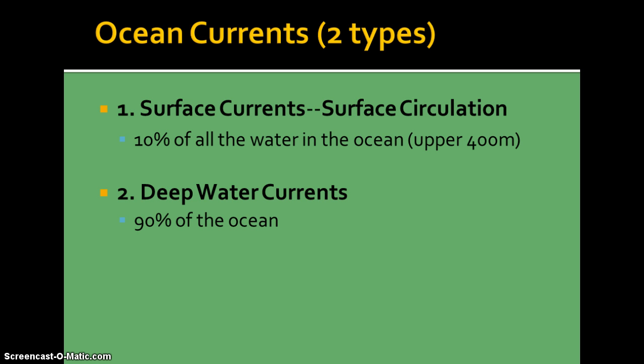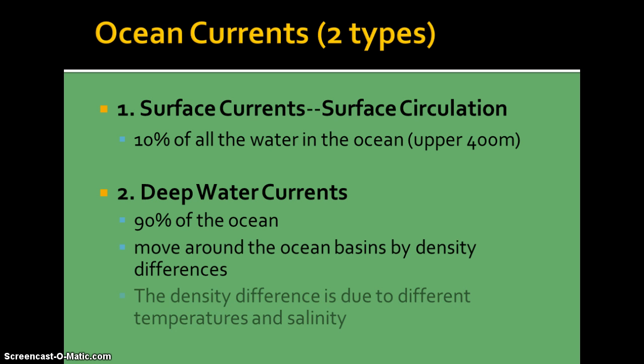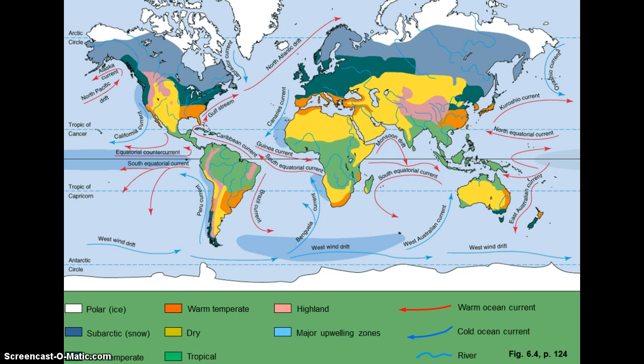90% of the ocean is part of the deep water currents in the great ocean conveyor belt, which we'll take a look at. The deep currents are affected by differences in density. Temperature and salinity are both factors that are going to affect the density of the water.